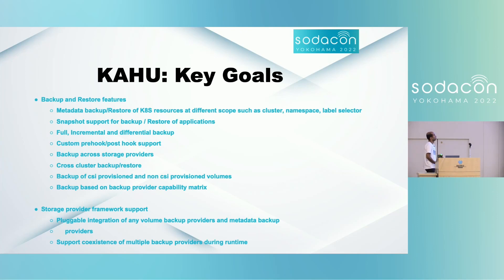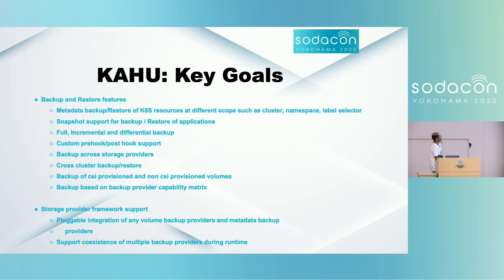What are the key goals for Kahu? At a high level: metadata backup and volume backup and restore for Kubernetes resources at different levels, snapshotting support for backup and restore of applications, and full, incremental, and differential backups. These are different kinds of backups based on use cases that help improve efficiency. Full backup always takes a complete backup, which may not be required in all cases. Identifying the change or difference and acting only on that is a more efficient approach.